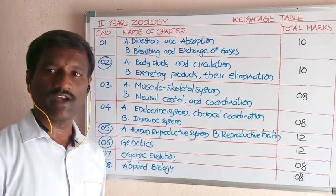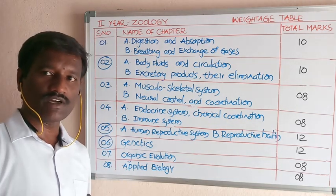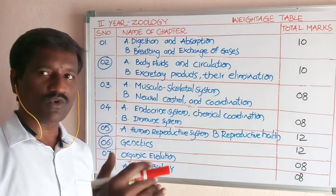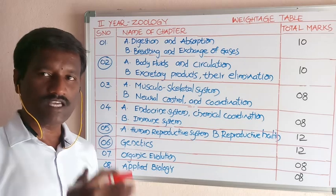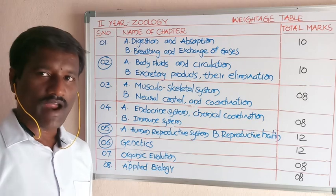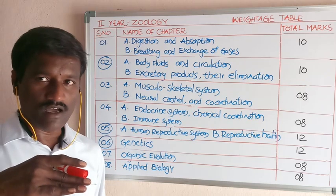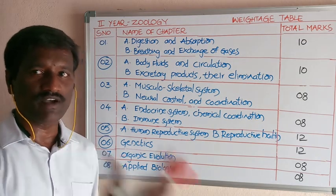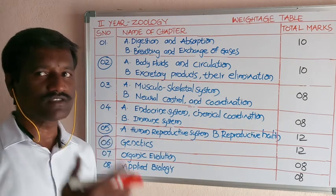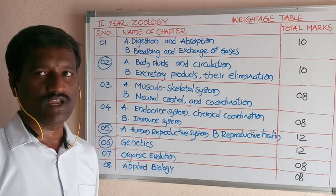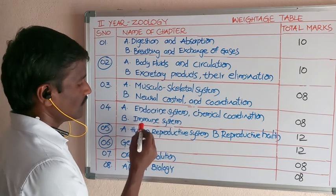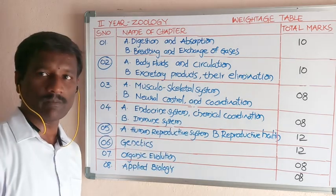The fourth chapter is the endocrine system and chemical coordination. The endocrine system consists of different types of endocrine glands that secrete hormones into the blood circulation. These hormones are chemicals that act on cells to perform different types of actions and regulate body activities.